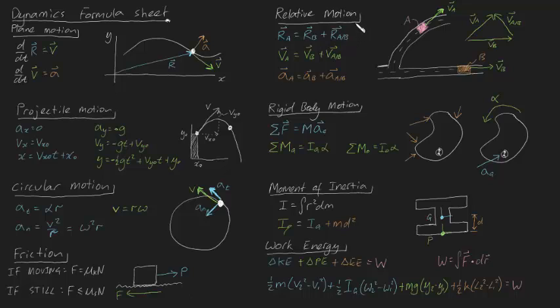Now let's quickly talk about relative motion. If we've got two particles, say a and b, and they're swooping out their own paths, then we can say that the position of a from some fixed axis is going to be equal to the position of b plus the position of a relative to b.